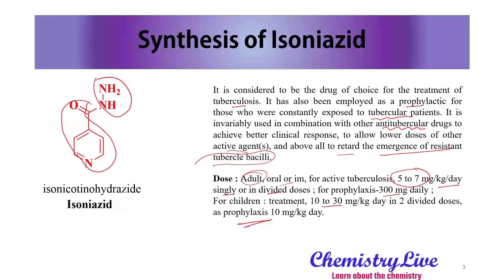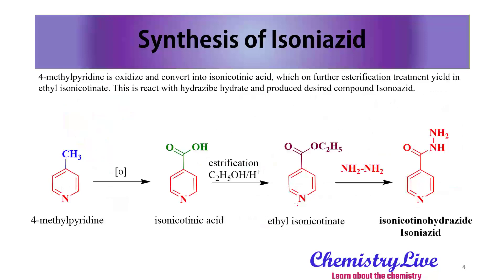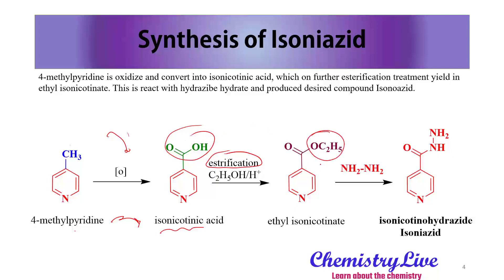In the synthesis of isoniazide, 4-methylpyridine is converted into isonicotinic acid by oxidation — we add oxygen to get the acid. When we perform esterification with ethanol, the acid group is converted into an ethyl ester group, giving us ethyl isonicotinate.